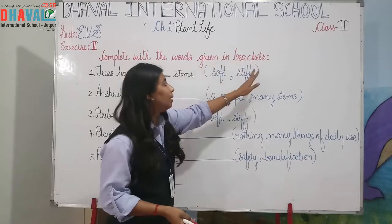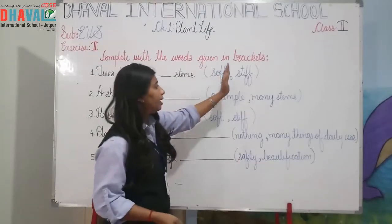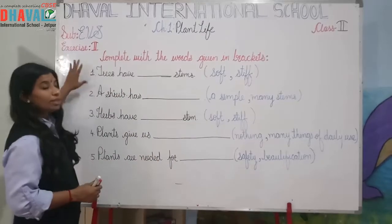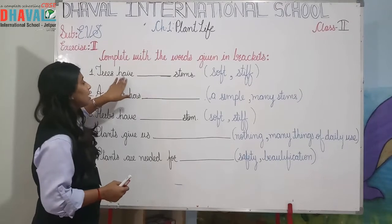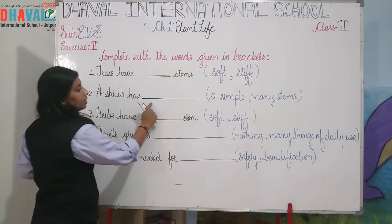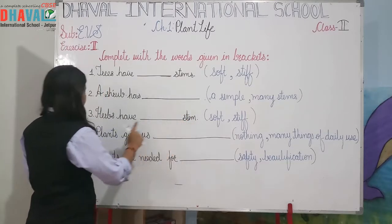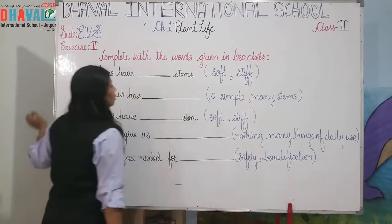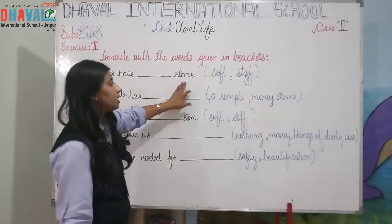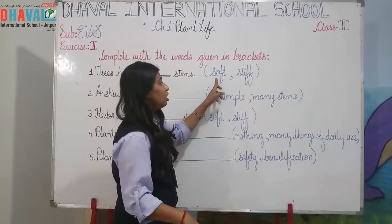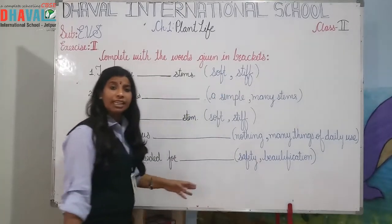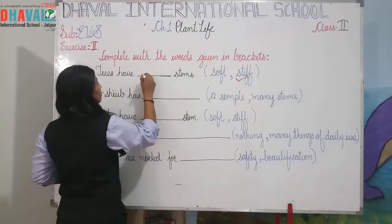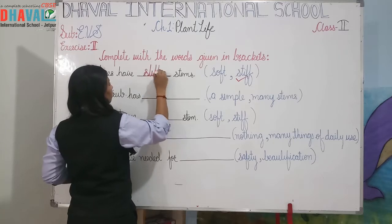Complete with the words given in the bracket. Fill in the blanks are given and in the bracket some words are given — we have to choose the appropriate word to complete the sentence. First: trees have dash stems. In the bracket, two words are there — soft and stiff. Trees have stiff stems.